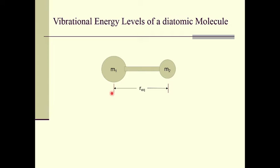Let us consider a polar diatomic molecule like HCl. Let us fix or anchor the chlorine atom at one axis and imagine pushing and pulling of the H atom closer or away from the Cl atom. This will change the potential energy of the molecule, and we have plotted the variation of potential energy against the inter-atomic distance r, as already seen in the diagram.